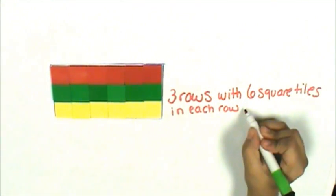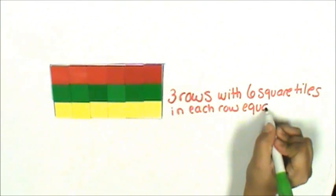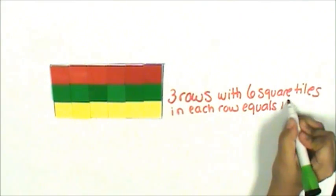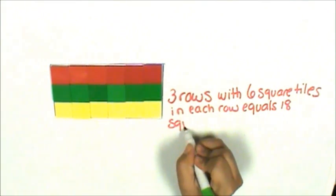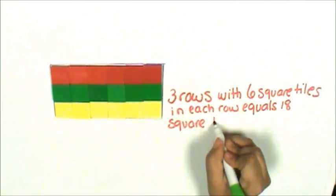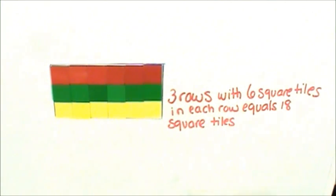And that equals 18 square tiles because 6 plus 6 plus 6 is 18. Let's go ahead and double check just to make sure.